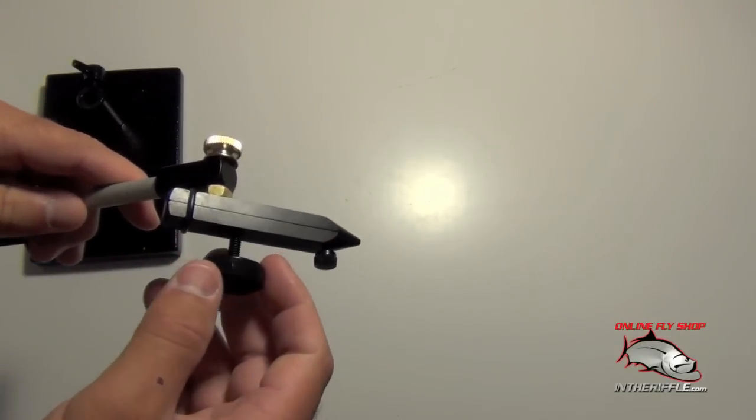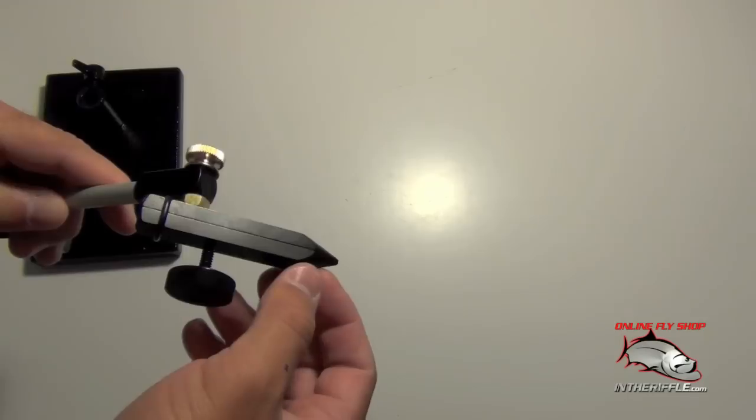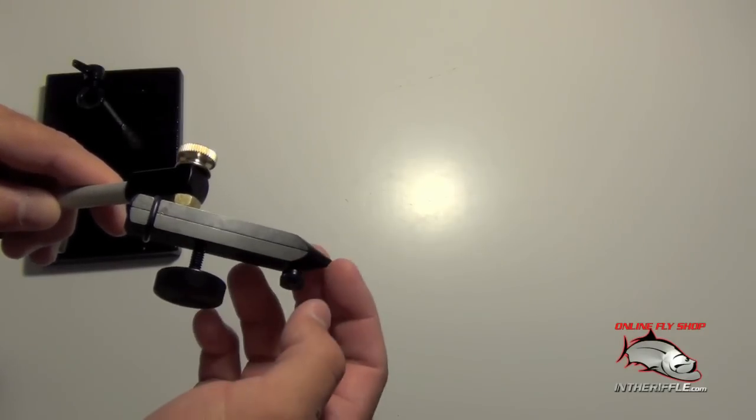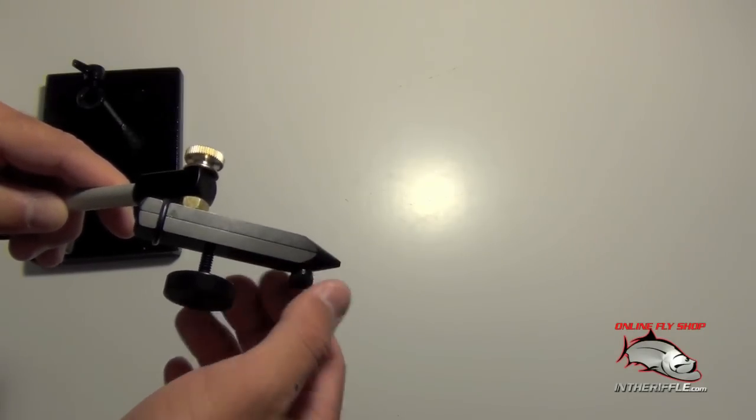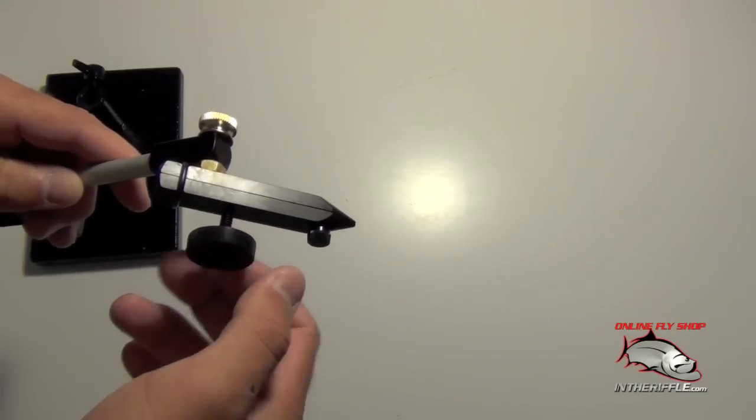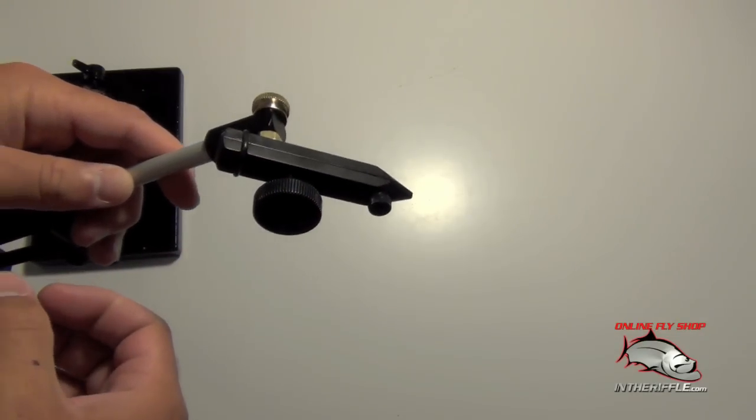You have two tensioners here. You simply adjust the small thumbscrew, put your hook in, tighten it down, and then you tighten down the large thumbscrew and that'll pinch the fly into place.